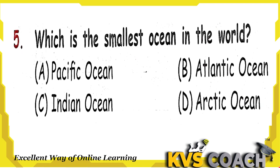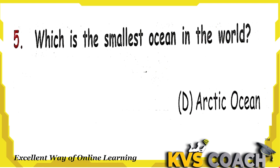Next question: which is the smallest ocean in the world? Option A, Pacific Ocean — this is the largest and deepest ocean of the world. Option B, Atlantic Ocean — this is the second largest ocean. Option C, Indian Ocean — this is the third largest ocean. Option D, Arctic Ocean — this is the smallest ocean in the world. There are five oceans in the world, and the smallest is the Arctic Ocean, option D.